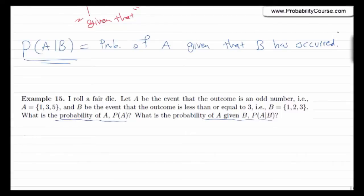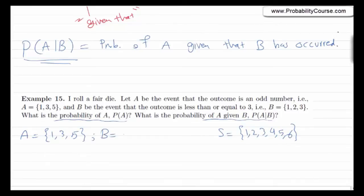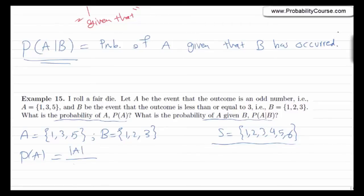Let's solve this problem. The sample space is {1, 2, 3, 4, 5, 6}. Event A is {1, 3, 5} and event B is {1, 2, 3}. Since all outcomes are equally likely, the probability of A is 3 over 6, which is 1/2.